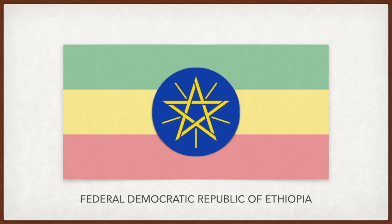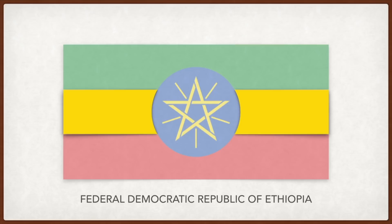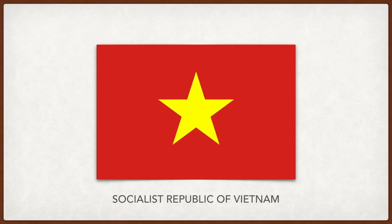Ethiopia: the blue circle represents peace, the star represents diversity and unity, and the rays prosperity. The green is for the land, the yellow is for peace and hope, and the red is for strength. Vietnam: the red symbolizes the communist revolution and the yellow star represents the Vietnamese people.